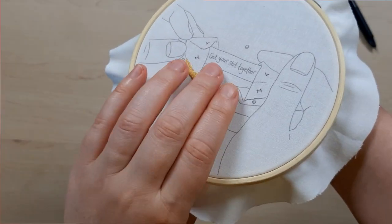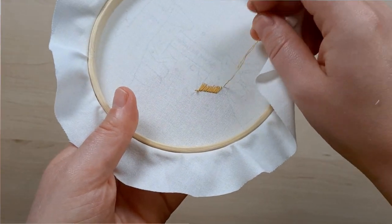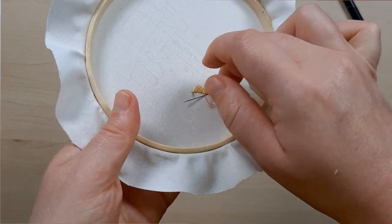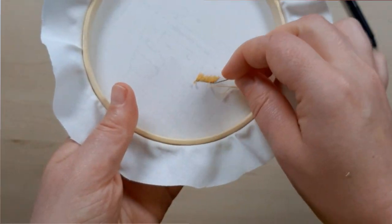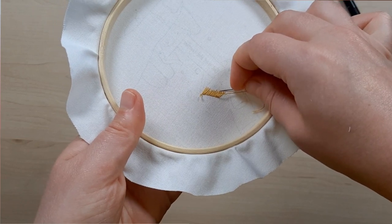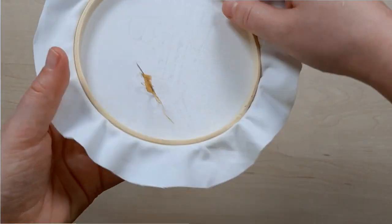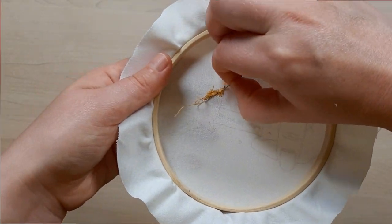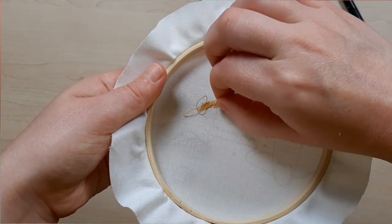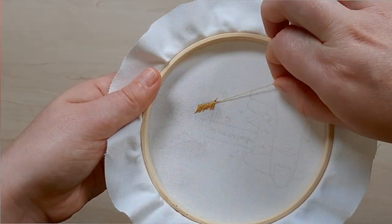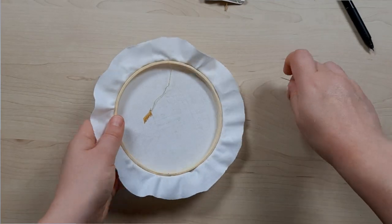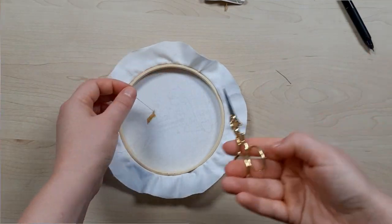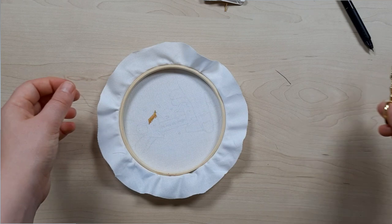Once you reach the end of that length of floss, you're going to want to turn your work over so the back is facing you. You're going to run your needle underneath some of the stitches on the back. I like to do that in a couple different sections just to really secure things. Pull your needle through and then you can just trim off a little bit of excess tail, and your stitches will be secured.